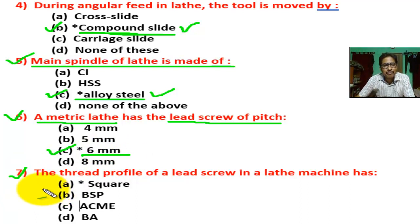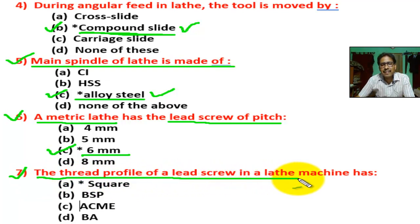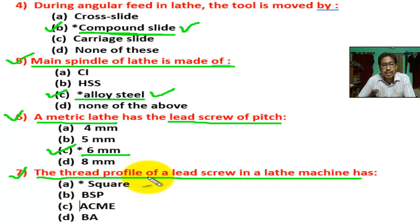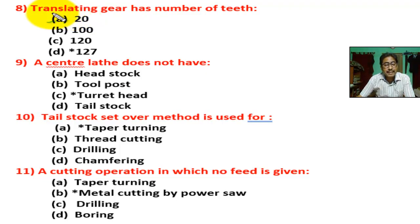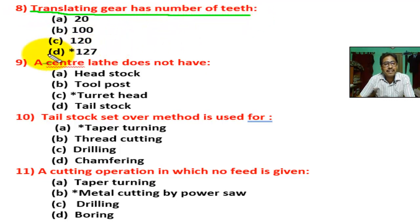Question number seven: the tooth profile of a lead screw in a lathe used for cutting threads — correct answer is A, square. Question number eight: translating gear, which converts between inch and millimeter (English to metric or metric to English), has a number of teeth — correct answer is D, 127.